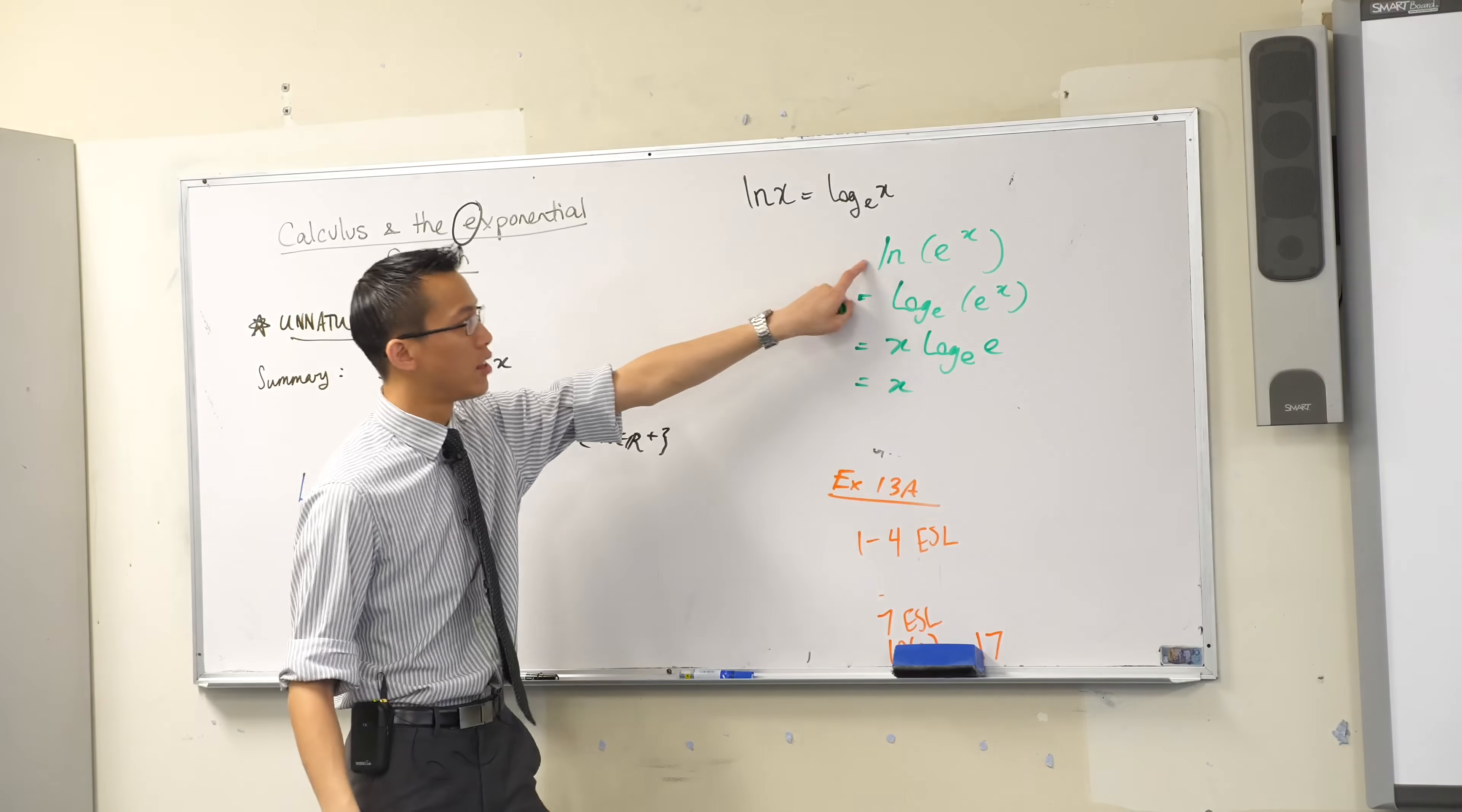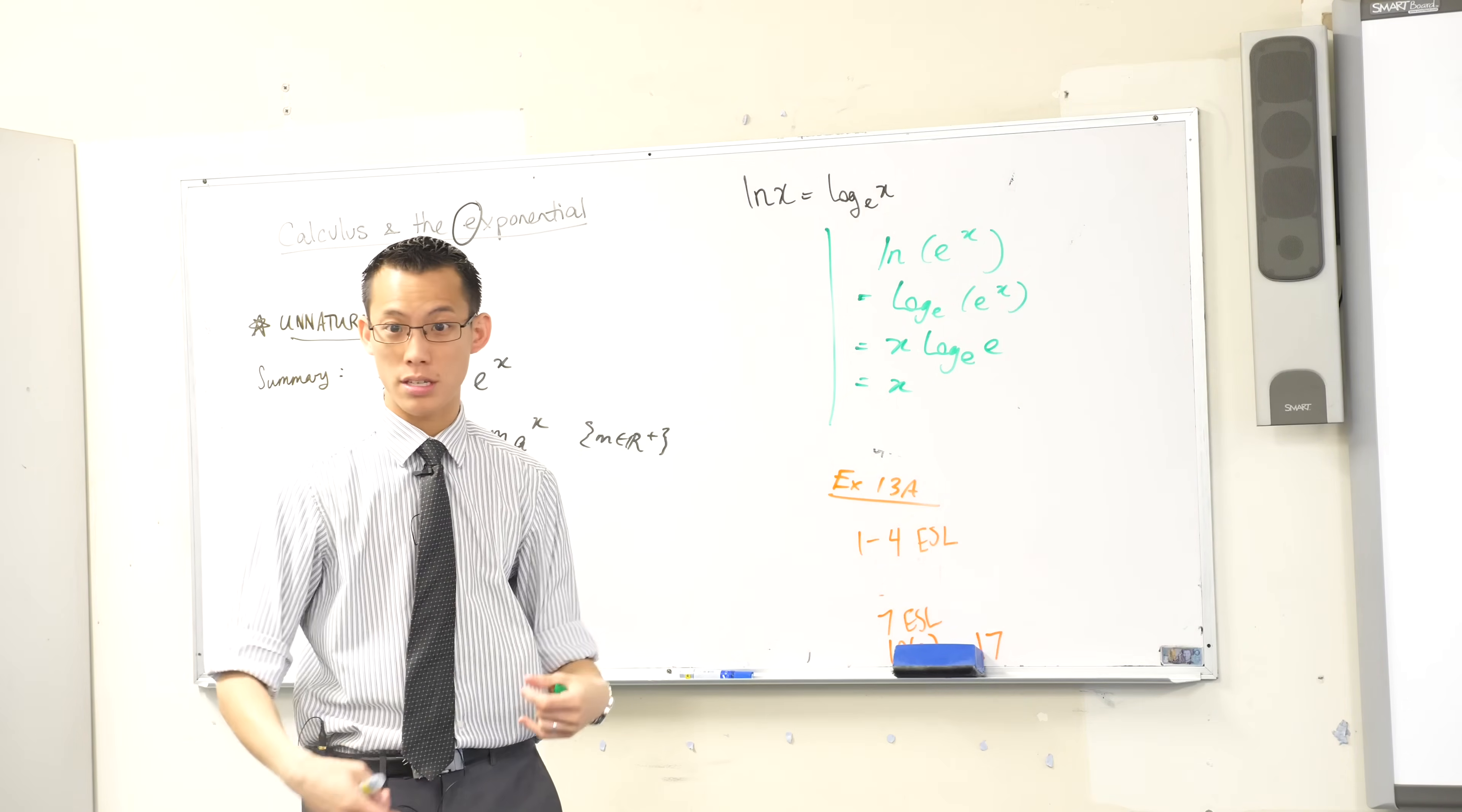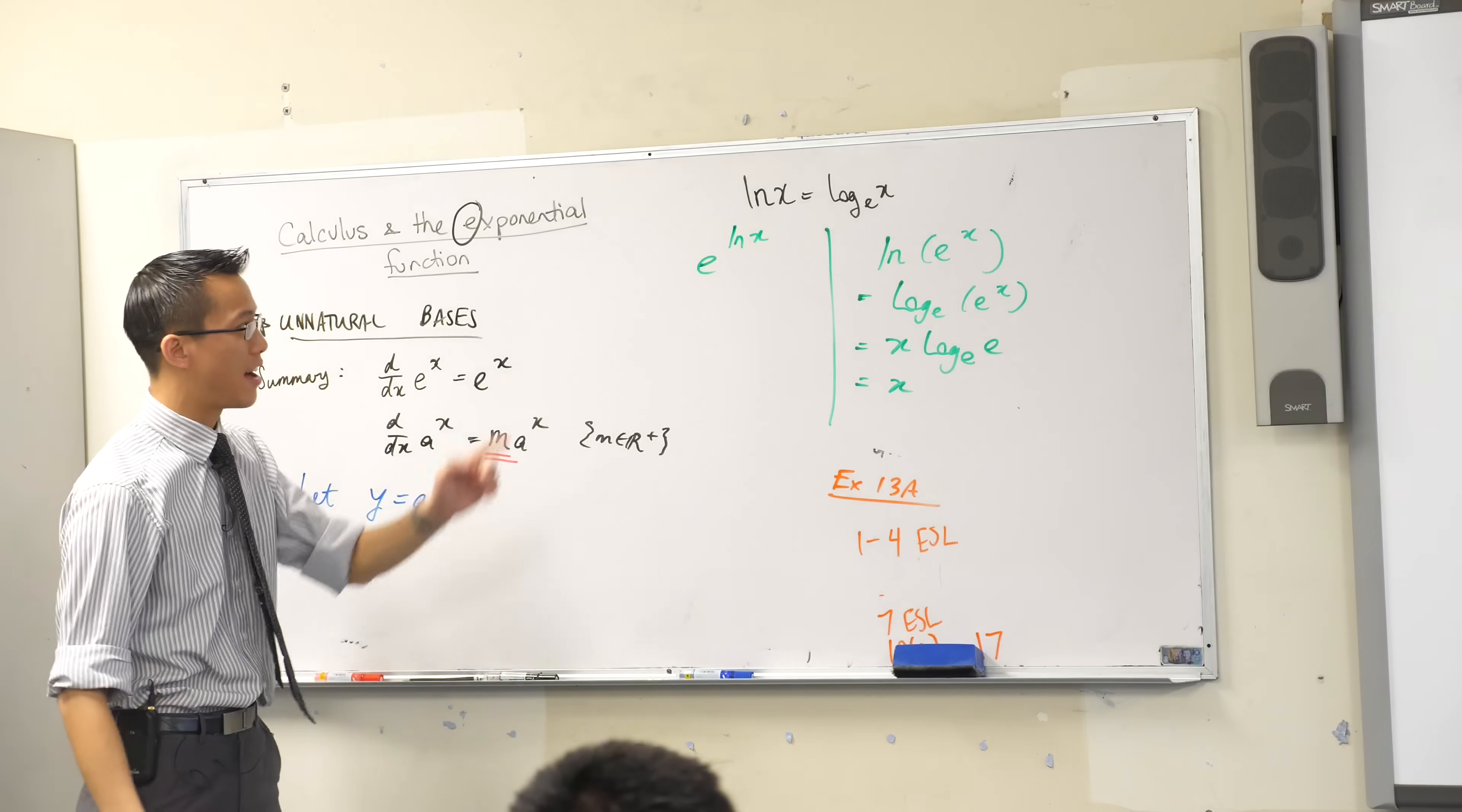The log base e of e is just 1. Now this is taking the log of an exponential. Because they're inverses of each other. But it's this reason that if they're really symmetrical inverses, I should be able to do the same thing in the opposite direction. Instead of taking the log of an exponential, I can take the exponential of a log.